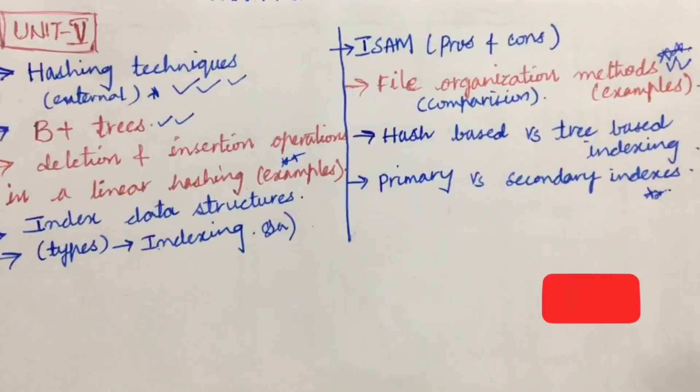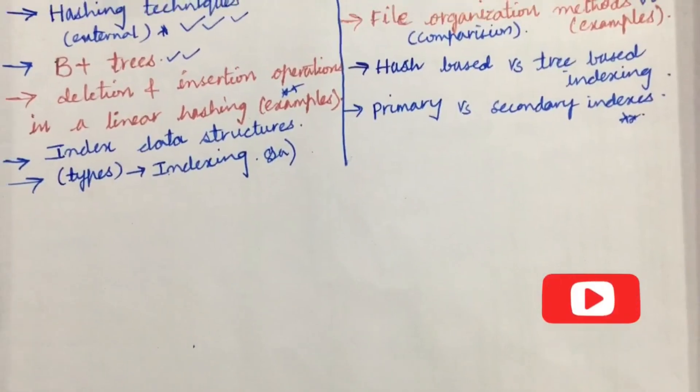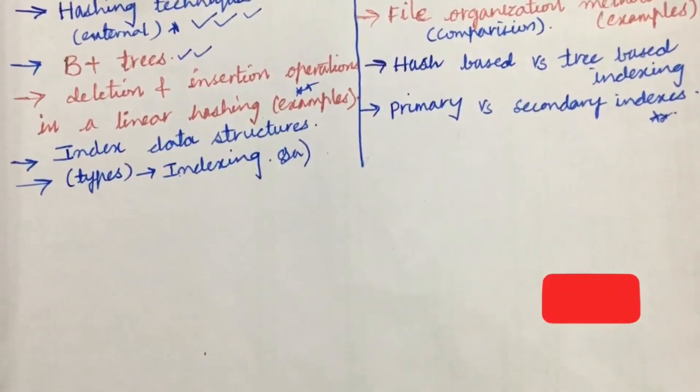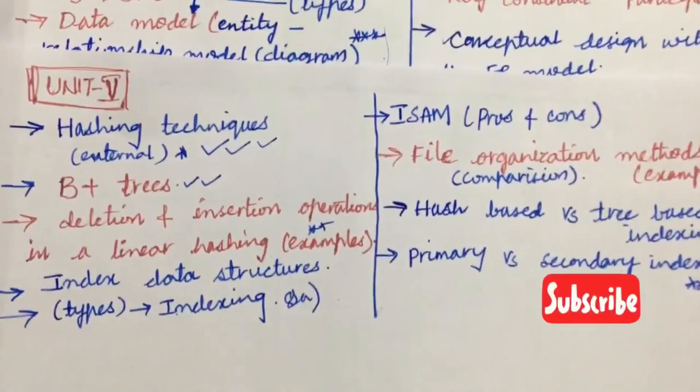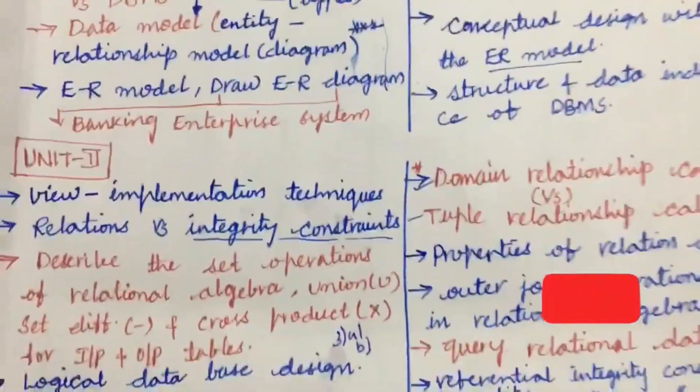As I told you students, the course DBMS is too lengthy in its structure and do not expect direct questions from Unit 1 and 2, like two-two questions. May be getting one and a half, one and a half questions from Unit 1 and 2, and the remaining will be covered from 3 as well as 4. From the fifth unit we can expect only one question for this time.